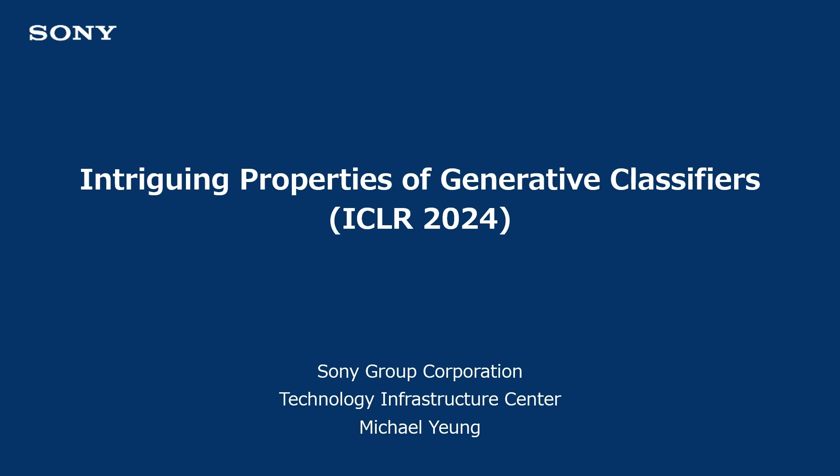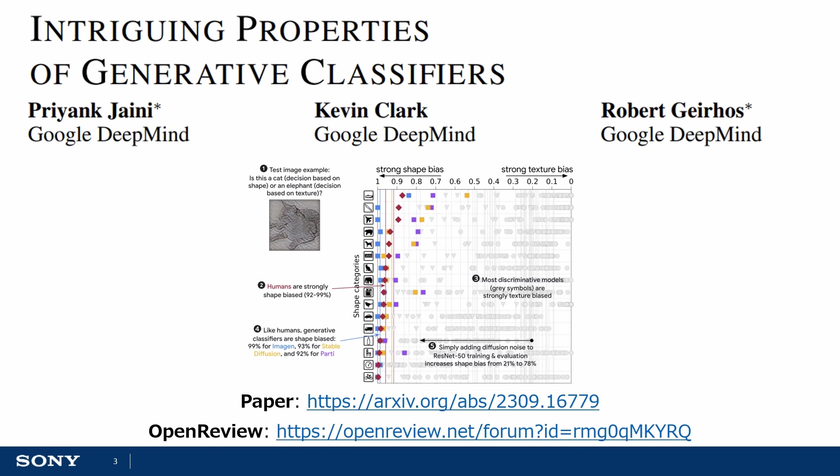Hi, I'm Michael Young from Sony, and in this video I will be going over a paper titled Intriguing Properties of Generative Classifiers, which has been accepted into the ICLR 2024 conference. If you are interested in the intersection between AI, computer vision, and neuroscience, I think you'll enjoy reading this paper. This paper was published by a group led by Robert Garros at Google DeepMind. The link to the paper is in the description, and the paper is very accessible, so I would highly recommend taking a look.